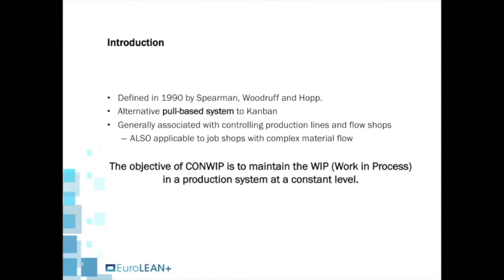Let's start with an introduction. CONWIP was defined in 1990 by Spearman, Woodruff, and Hopp. It is an alternative pull-based system to Kanban, and it is generally associated with controlling production lines in flow shops, but it can also be applied to job shops with complex material flow. The objective of CONWIP is to maintain the WIP, or work in process, in a production system at a constant level.